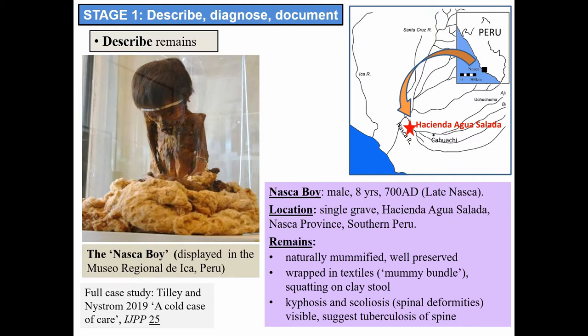Stage one of the bioarchaeology of care describes and documents the diagnosis. It brings together all personal and lifeways information available for the subject and provides the context for all subsequent analysis and interpretation. The subject today is a young boy from the Nazca culture, aged eight at death, dating to 700 AD — the late Nazca period. He was recovered from a grave in Hacienda Agua Salada, Nazca province, Peru. His remains were wrapped in textiles forming a mummy bundle, positioned on an adobe stool with lower legs drawn back. Visible spinal deformities suggested Pott's disease, or spinal tuberculosis.